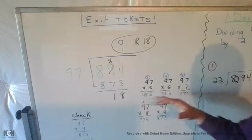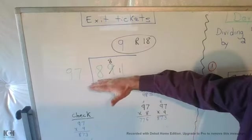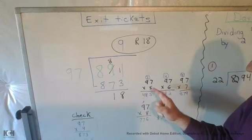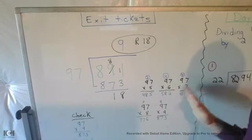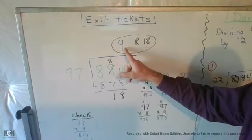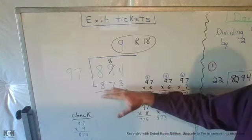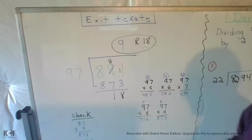I didn't start at 97 times 1. I started at 97 times 5 and worked my way up. I realized that it actually goes in nine times. You get 873, which is the closest you can get.